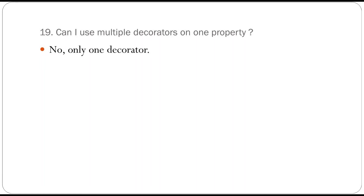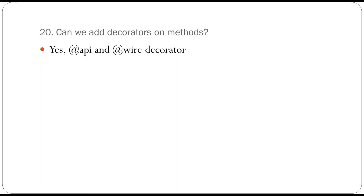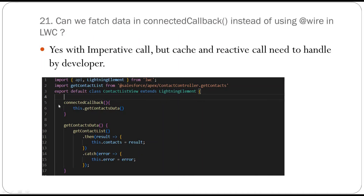Can we use multiple decorators on one property? No, we can only use one decorator per property. Can we add decorators on methods? Yes — the API decorator can be used on a method to make it public so parent components can call it, and the wire decorator can also be used with a method to handle the wire response.